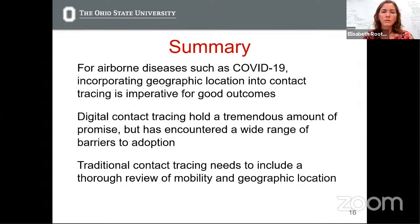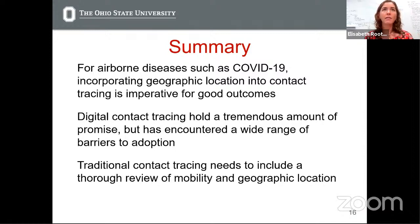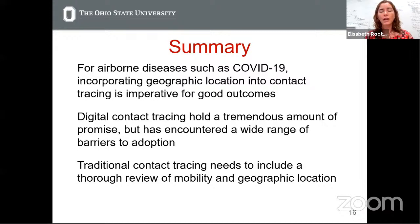To sum up: for airborne diseases like COVID-19, incorporating geographic location into contact tracing is really important for curbing the spread. Digital contact tracing and apps that incorporate place, space, and geography hold a tremendous amount of promise, but they've encountered a wide range of barriers to adoption. Traditional contact tracing needs to include a thorough review of mobility and geographic location. There are technologies out there that can help us, but we have not effectively been able to harness and use them for the current pandemic crisis. Thank you very much.